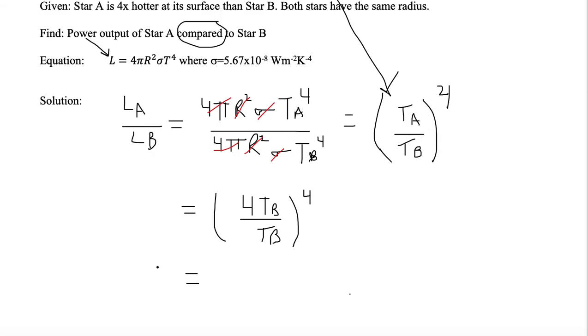And so we're finally left with the luminosity of A relative to the luminosity of B. TB is 4 to the fourth power. Because if we eliminate like variables, TB and TB drop out.